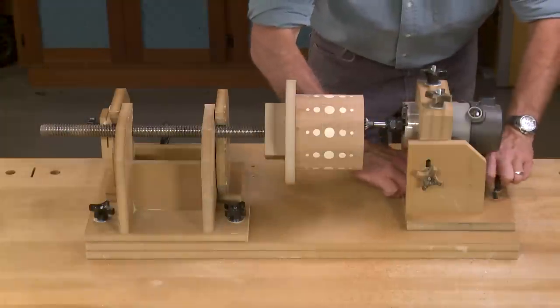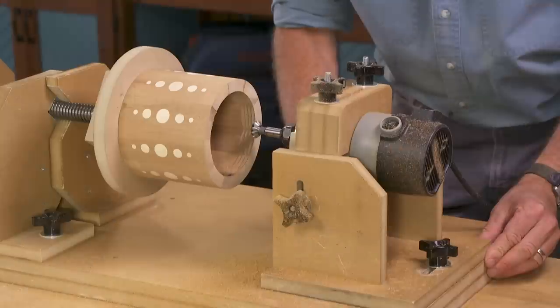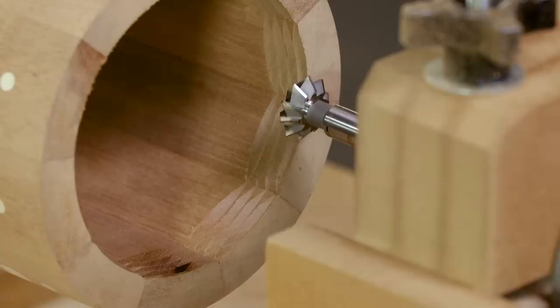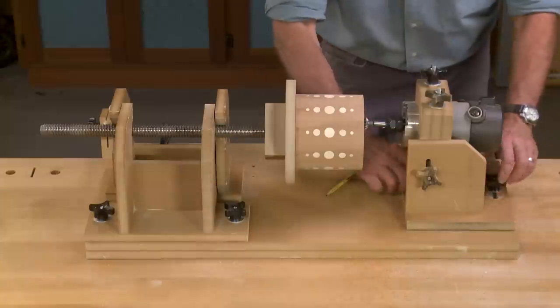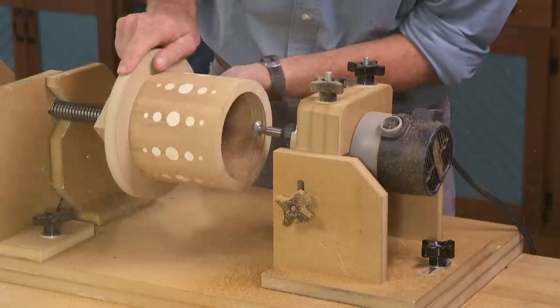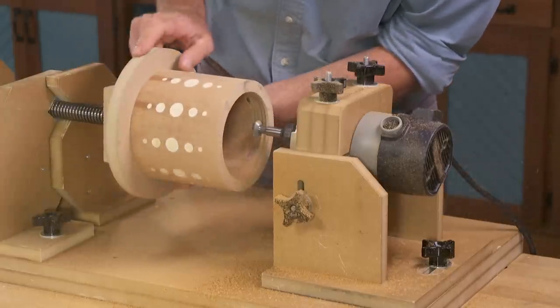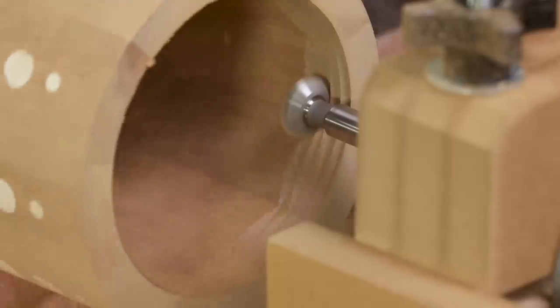I'll then shut the router off, loosen the knobs underneath the router carriage, and move the router carriage a little bit so that I have a slightly deeper cut. I'll repeat the process, and then do it a third time, leaving well-cut, stout wooden threads.